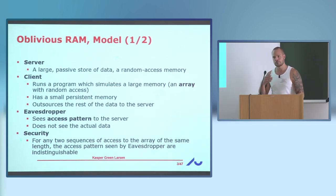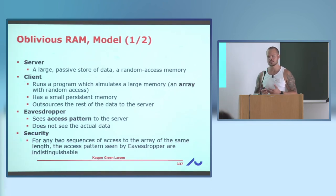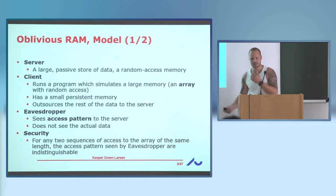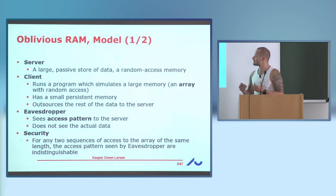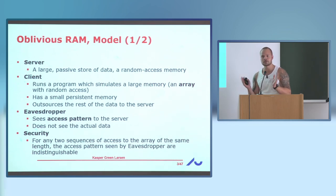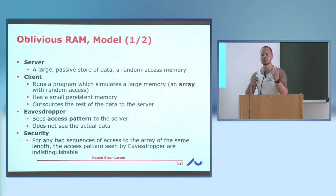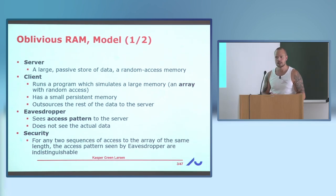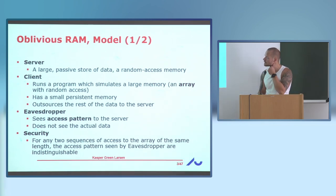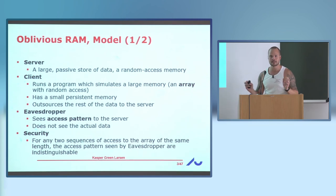But the issue is, if you're running an algorithm and the server knows what algorithm you're running — say you're running your data as a graph and you're running a breadth-first search — if the server just observes which places in memory you look up as you're running your breadth-first search, it's clear you can learn a lot about the structure of the graph just by looking at which memory locations are accessed after each other. So just seeing the memory access pattern might reveal something about your data. The goal of oblivious RAMs is to prevent this by scrambling or obfuscating the memory access pattern.